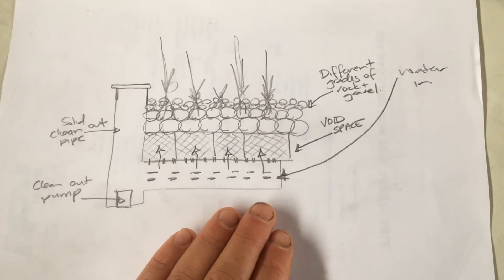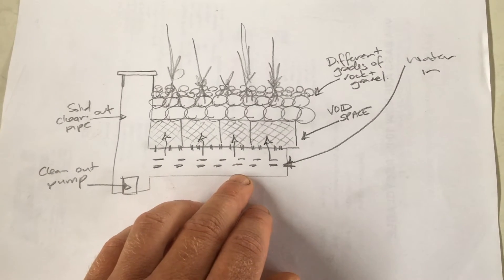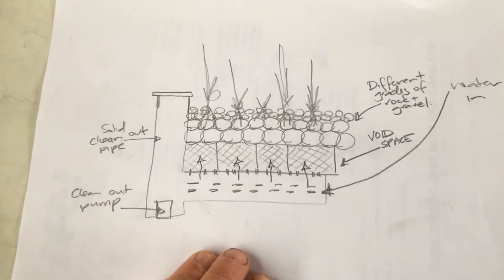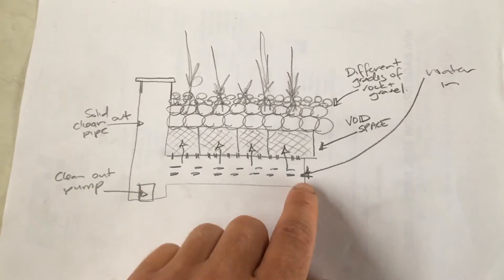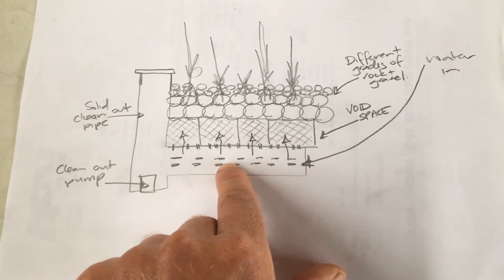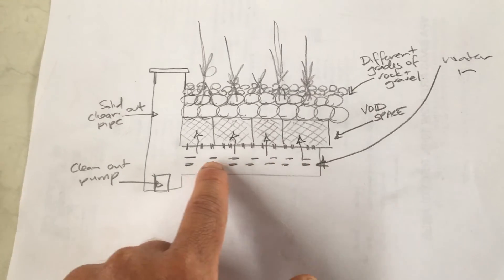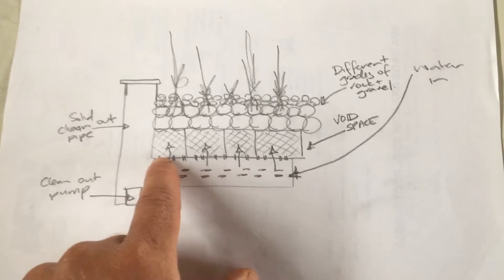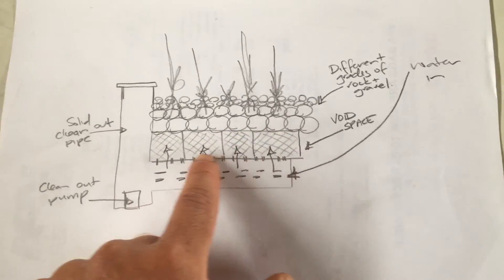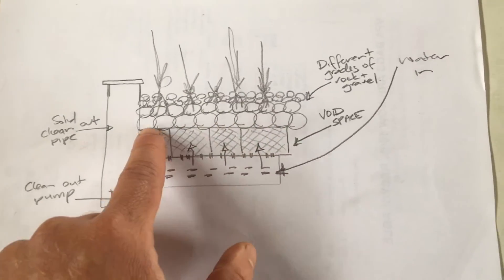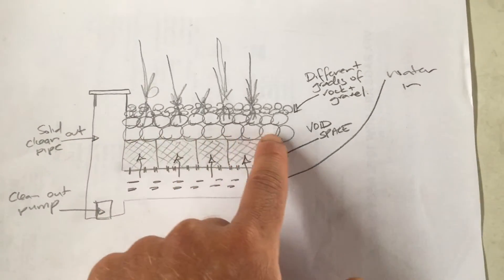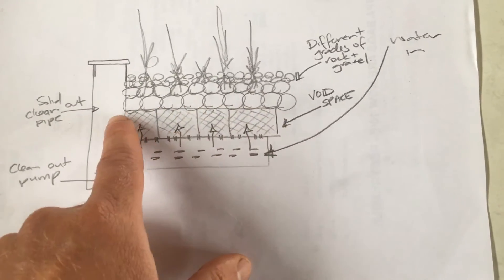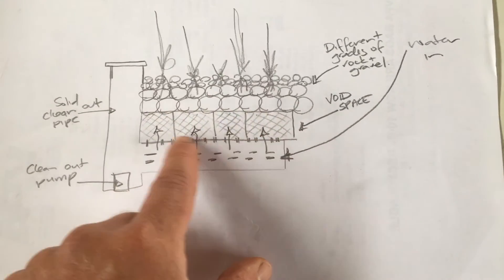So this is how to design a good bog filter where the water flows up through the system. This is best for your larger ponds. Here we have the water comes in and this is a perforated pipe down along here. So it's got little grooves or slots that let the water out. It rises up through here we have like a void space. This allows the solids to fall and just creates an area where debris is not going to get stuck.